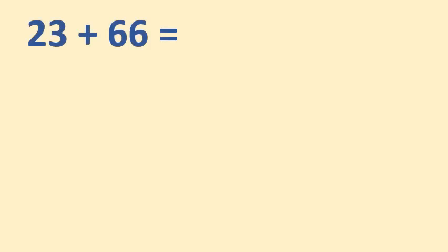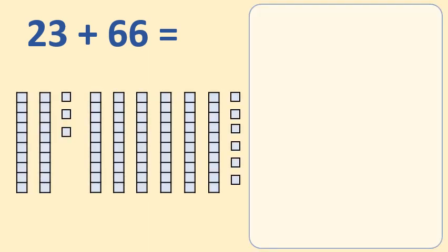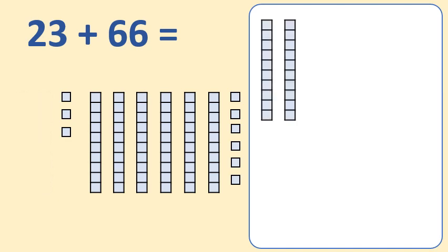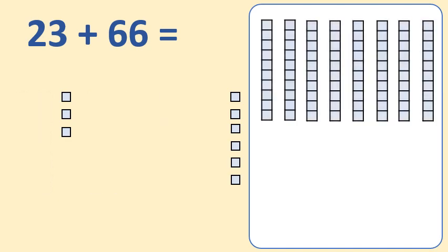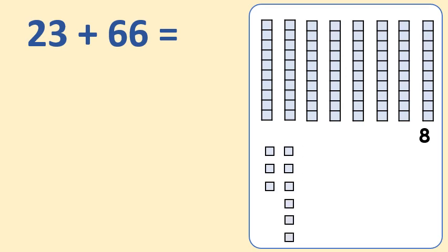Let's try again with some more two-digit numbers: 23 plus 66. First, let's add together the tens. 23 has two tens, and 66 has six tens. Two plus six equals eight, so there are eight tens in total. Now let's add the ones. Three plus six equals nine, so there are nine ones. Eight tens and nine ones is 89.